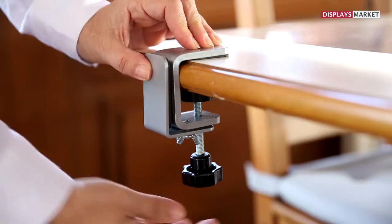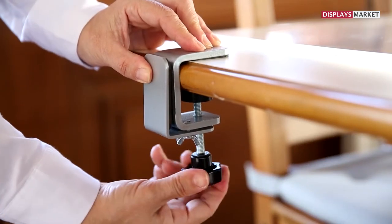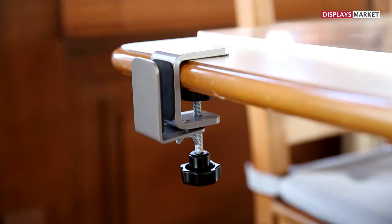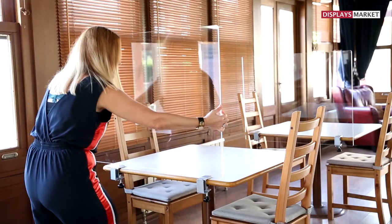Let's see how to place the clamp. Simply clamp it on the edge of the table and tighten the black knob underneath. Open the brackets to place the panel in between.